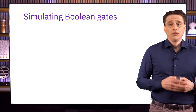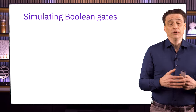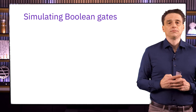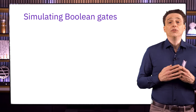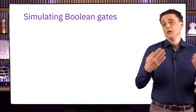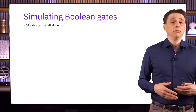The Boolean gates we need to worry about are NOT gates, AND and OR gates, and FANOUT gates. We're going to show that we can simulate these gates using NOT gates, controlled-NOT gates, and Toffoli gates. What we want are quantum circuits that allow us to compute the values of the Boolean gates when we give them qubits in standard basis states as input. For arbitrary quantum state inputs, the action will be determined by linearity as usual. We don't need to do anything special with the NOT gates — NOT gates are NOT gates, and they can be implemented directly.